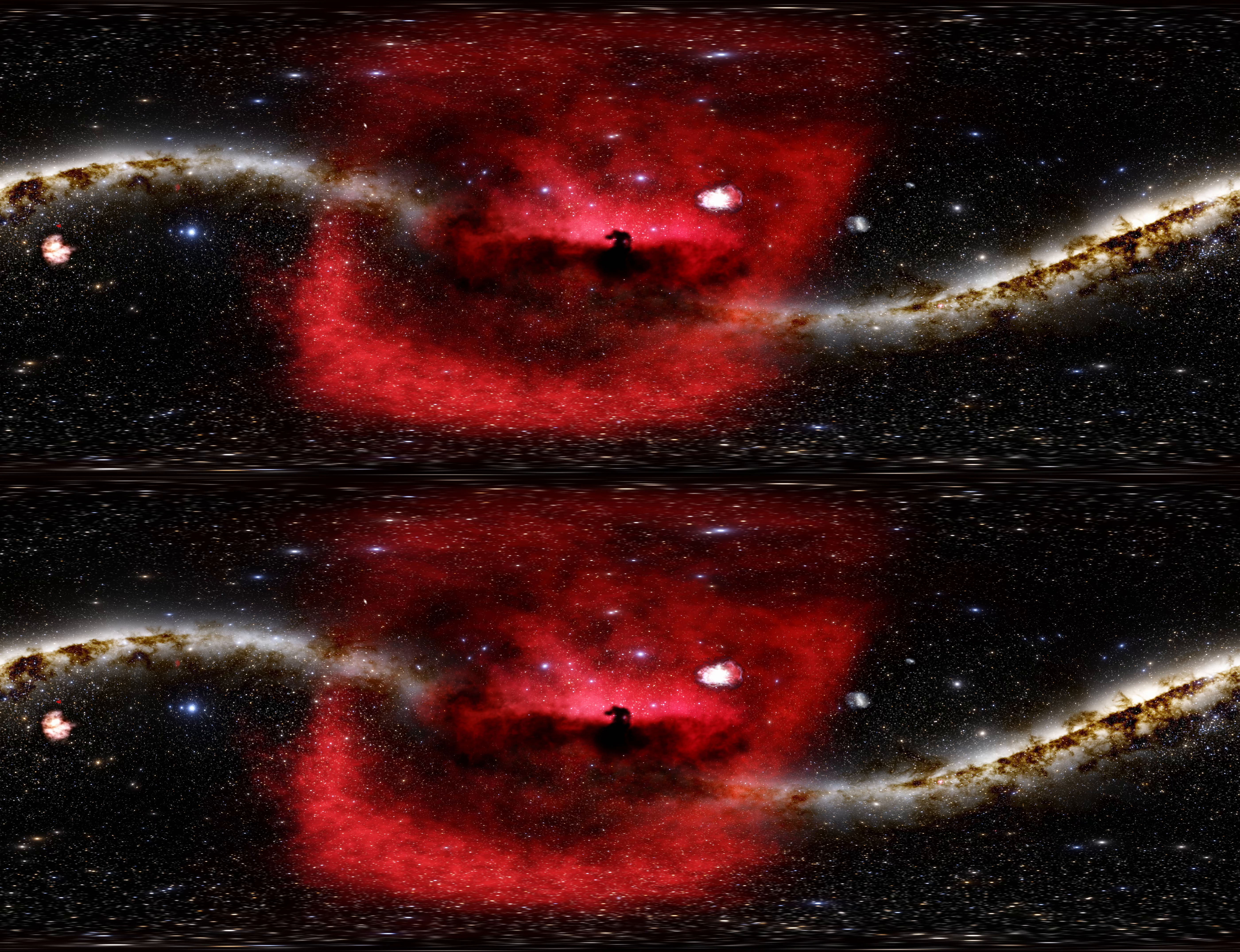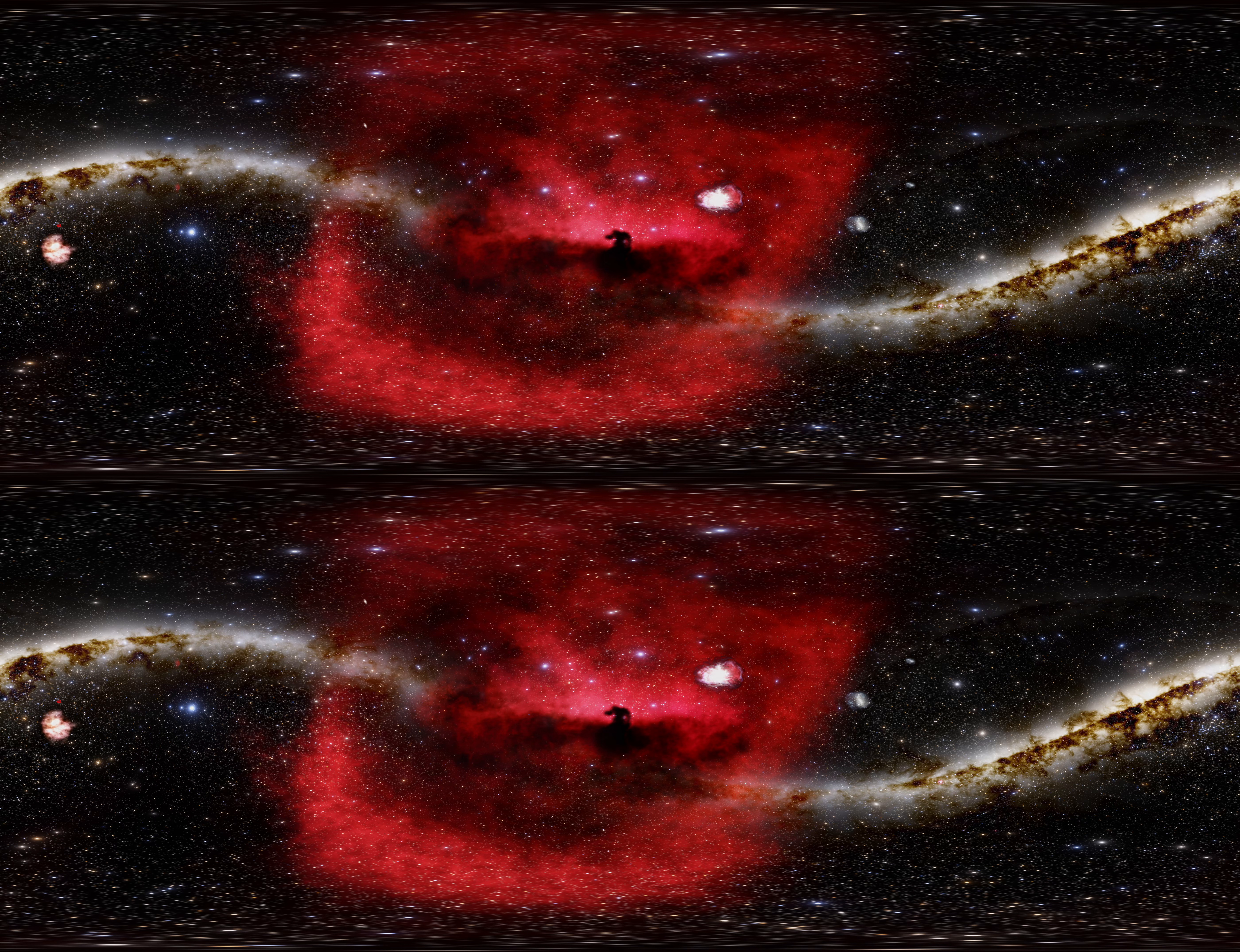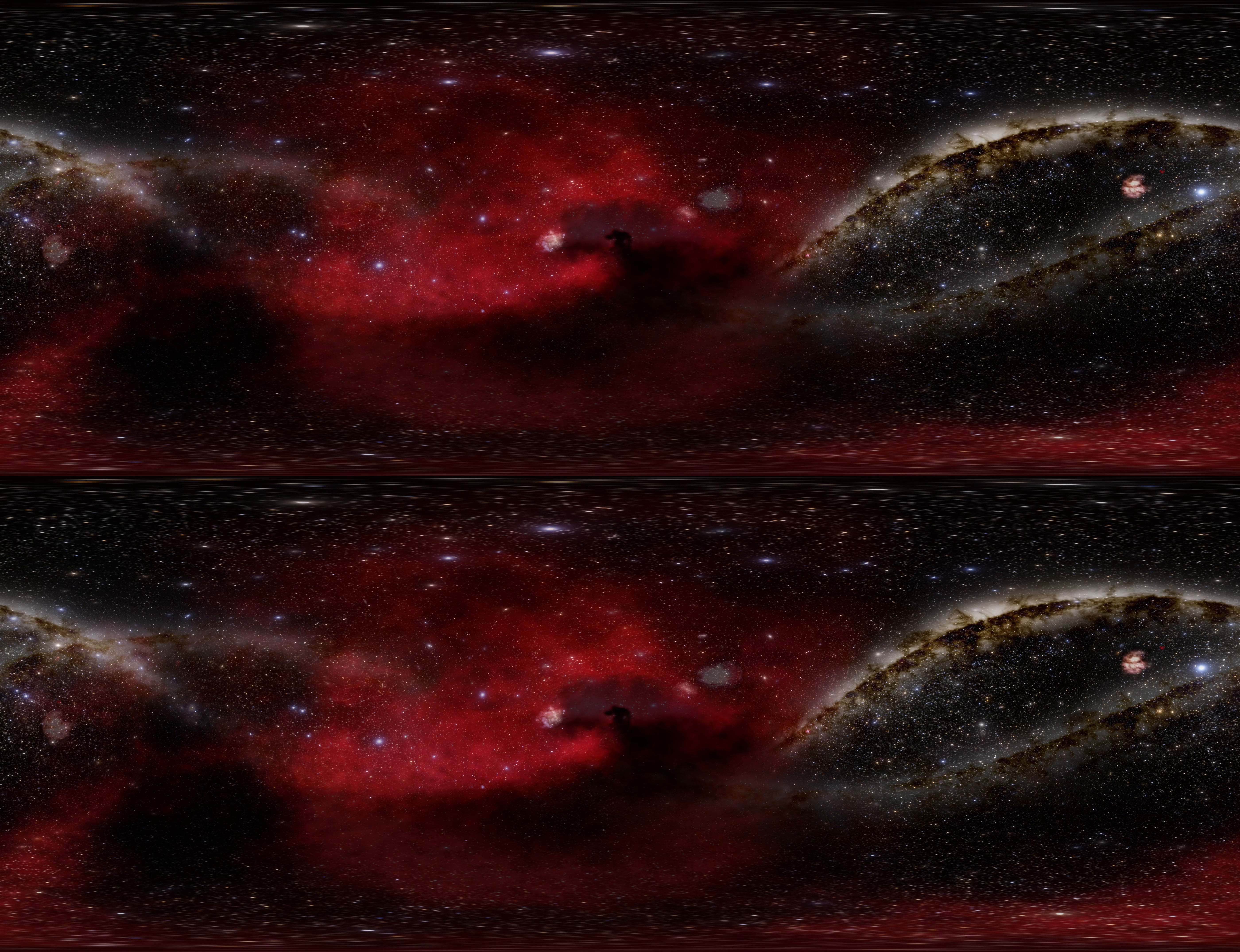The highlight of the Horsehead Nebula is its distinctive shape, which resembles a horse's head in profile. This shape is created by a dense molecular cloud of cosmic gas and dust that blocks the light behind it, making it a dark nebula.